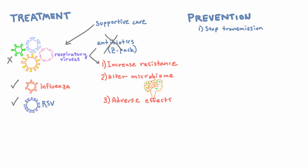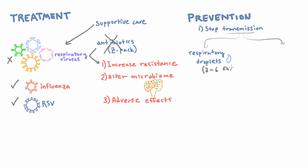The way that you stop transmission actually depends from virus to virus, because there are two different ways that viruses can be transmitted. The first is through respiratory droplets. The idea here is that viral particles sit in the secretions that we either cough or breathe out. These droplets are usually kind of big, so they can't travel that far through the air — usually about three to six feet.